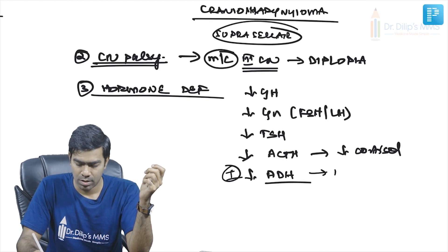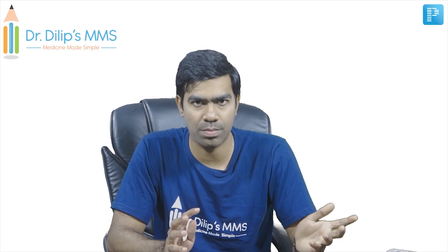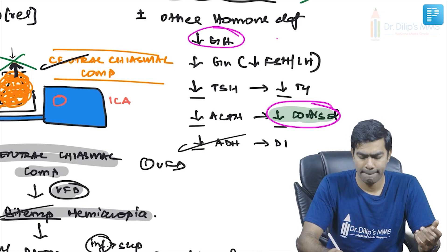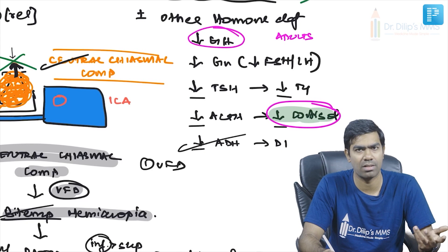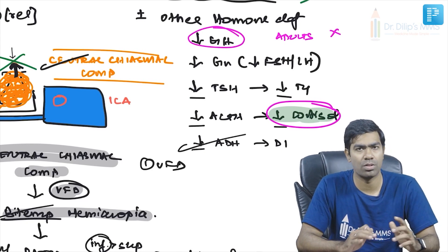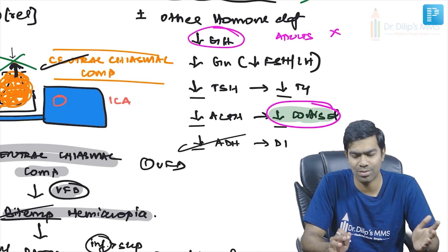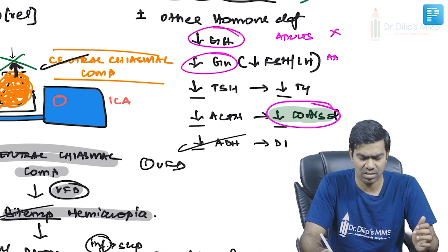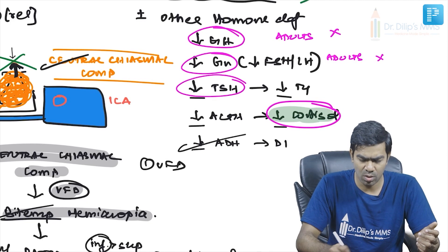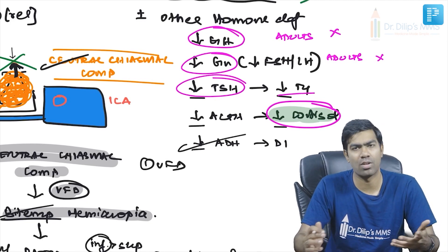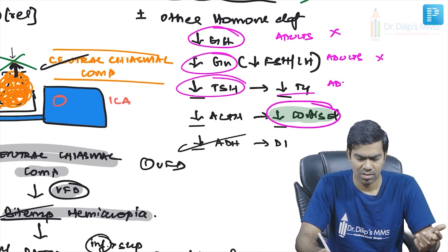In both apoplexy and Sheehan syndrome, multiple hormones may be deficient. The question is: which hormone should be replaced first? Growth hormone deficiency in adults is not life-threatening. Low gonadotropins causing amenorrhea is not life-threatening either.